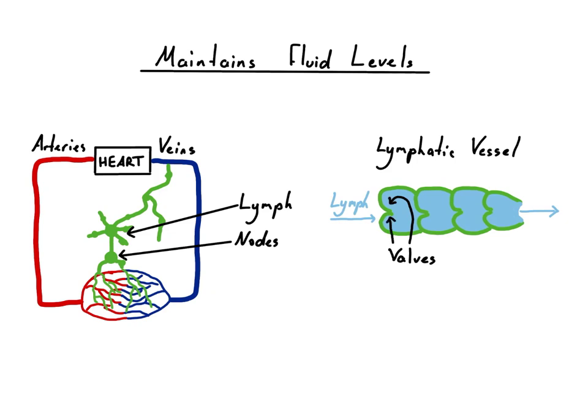Returning the lymph back to the circulatory system is of vital importance. The fluid which is recovered maintains blood pressure, which allows for nutrients, such as oxygen, to be pushed out of the capillaries to sustain all of your cells. A small decrease in blood pressure can cause dizziness and fainting, and a larger decrease can be life-threatening. So the lymphatic system is carrying out a very important job.